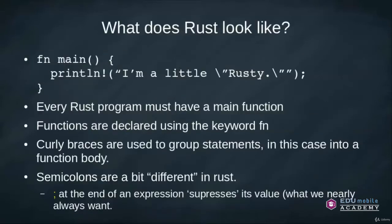So what does Rust look like? Well, it looks a lot like C — no surprises there. Here we're declaring a function called main, not passing any arguments. The keyword is fn, followed by main and curly braces. We print a line using println! — the exclamation mark denotes a macro, not a function. We can escape double quotes inside a string. Every Rust program must have a main function.